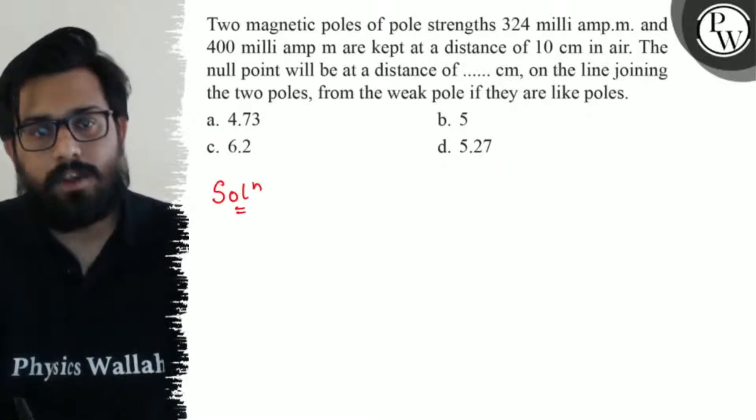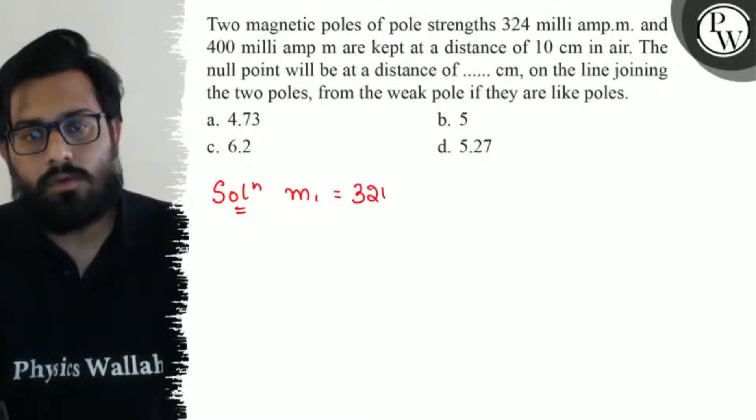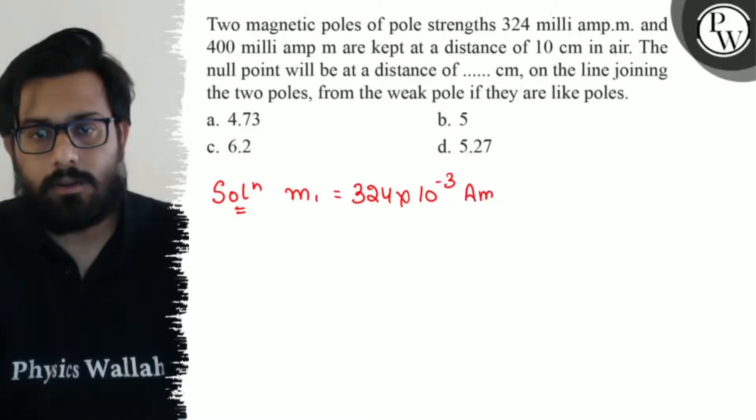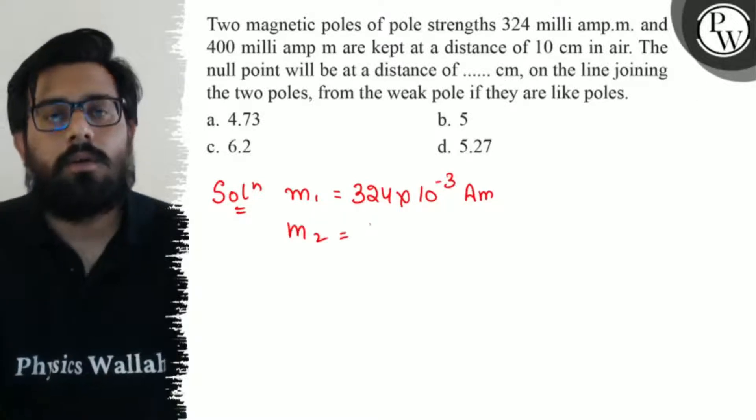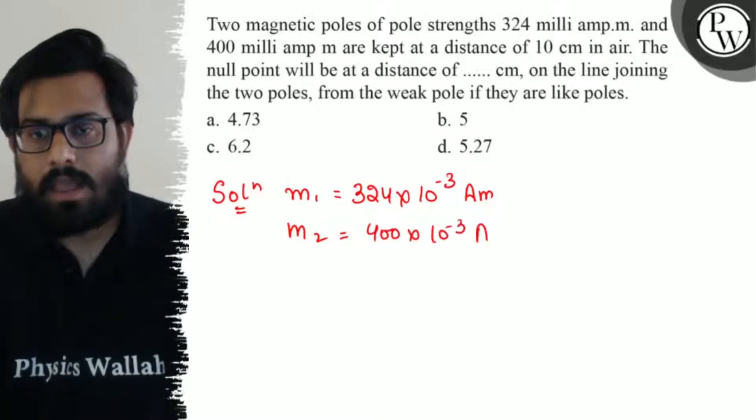So here we have two different poles. M1 of 324 into milli, so milli ki jagha meh lithar 10 to the minus 3 ampere meter. M2 is 400 into 10 to the minus 3 ampere meter.